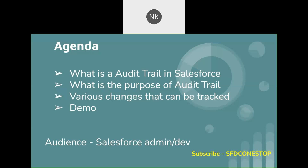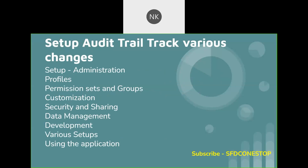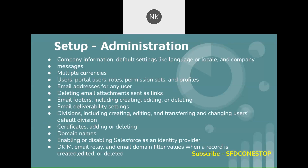Now let us understand what all the Setup Audit Trail can track. There are different components or sections where you can track changes — it could be administration, profile section, permission sets and groups, customization, security and sharing, data management, development, and various setup-related changes. If you are using the application, those changes can also be tracked using the Setup Audit Trail.